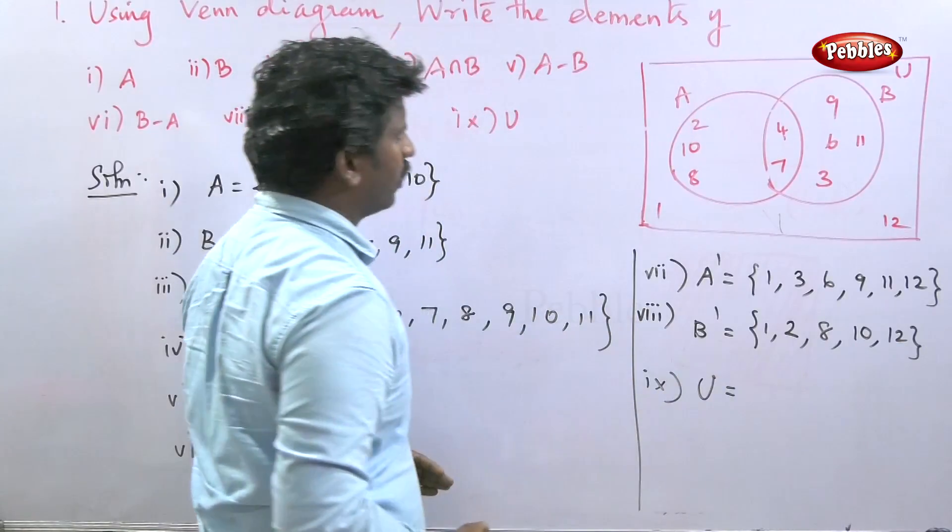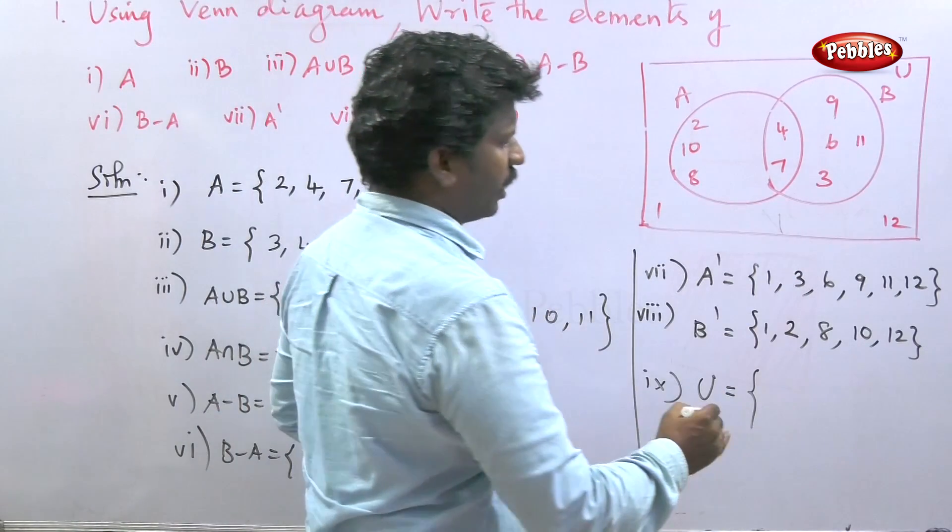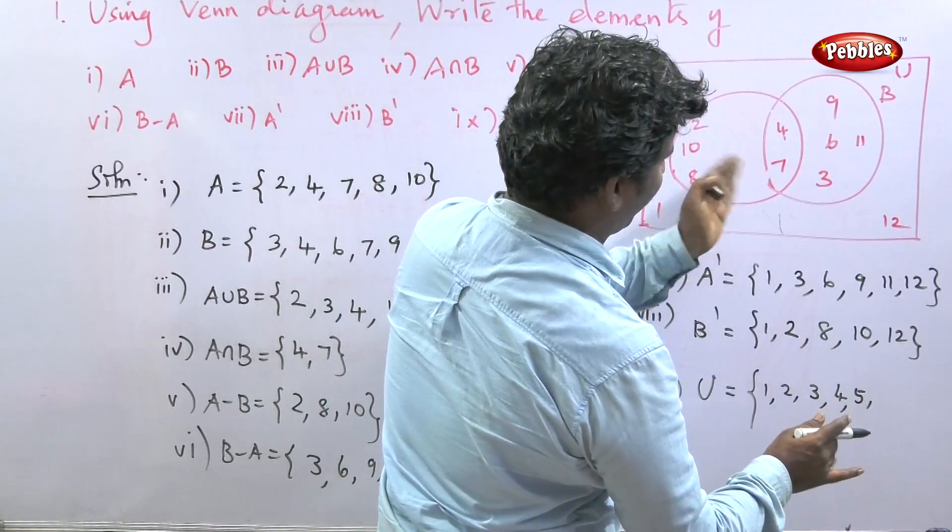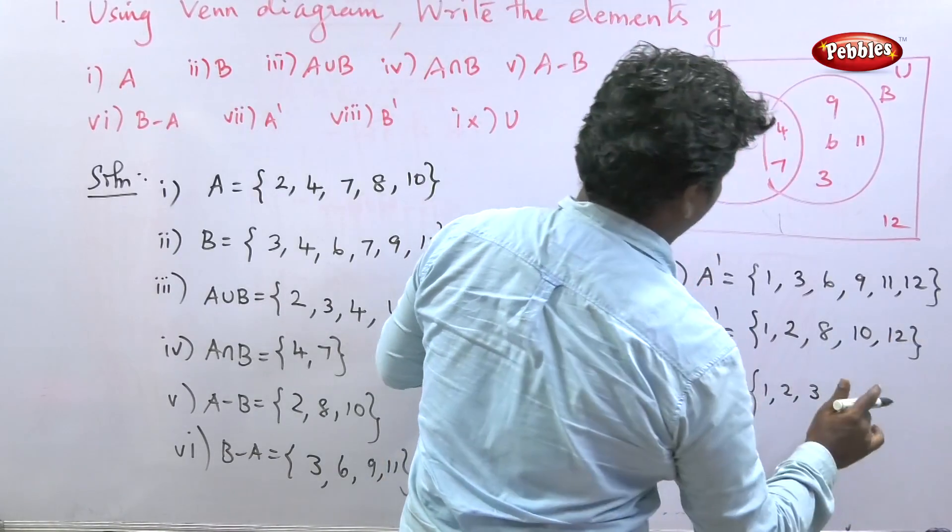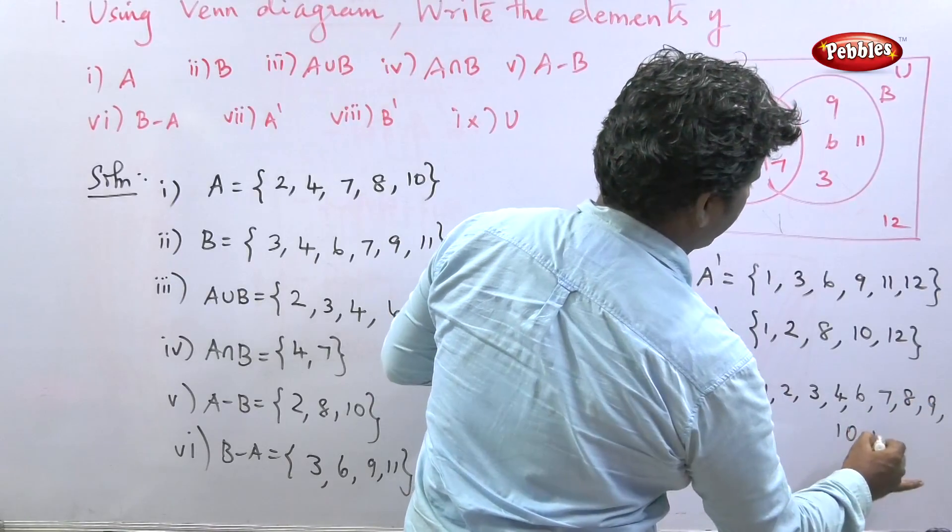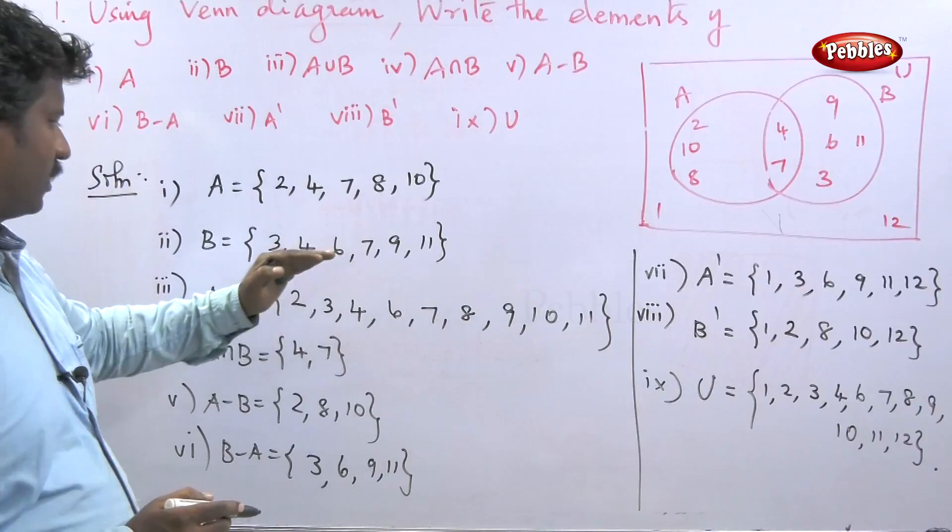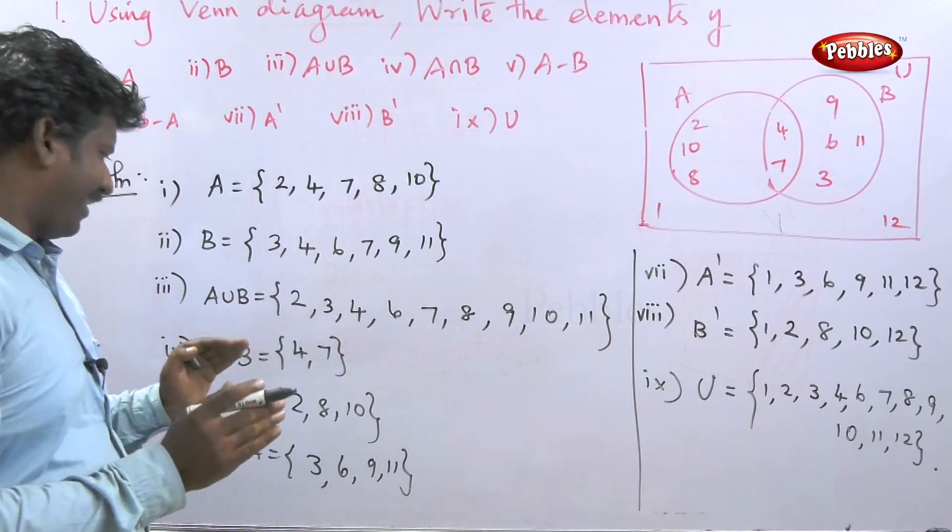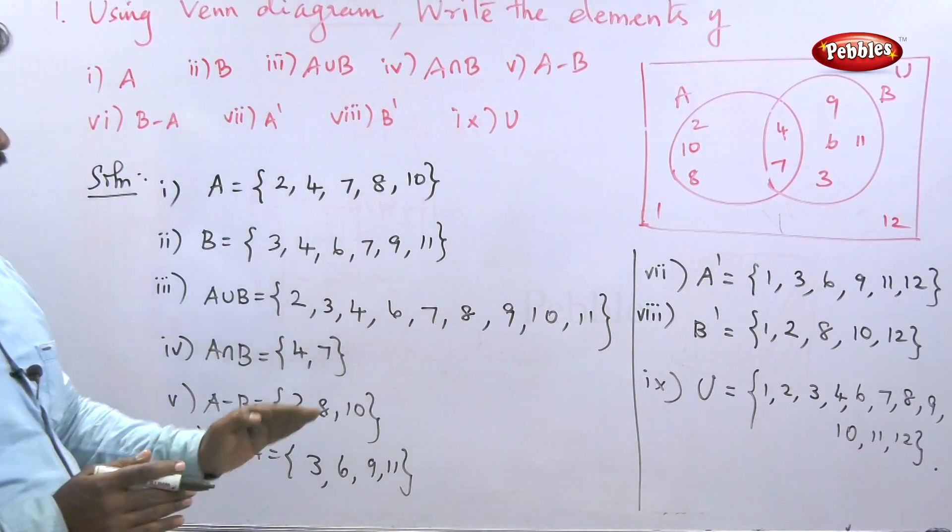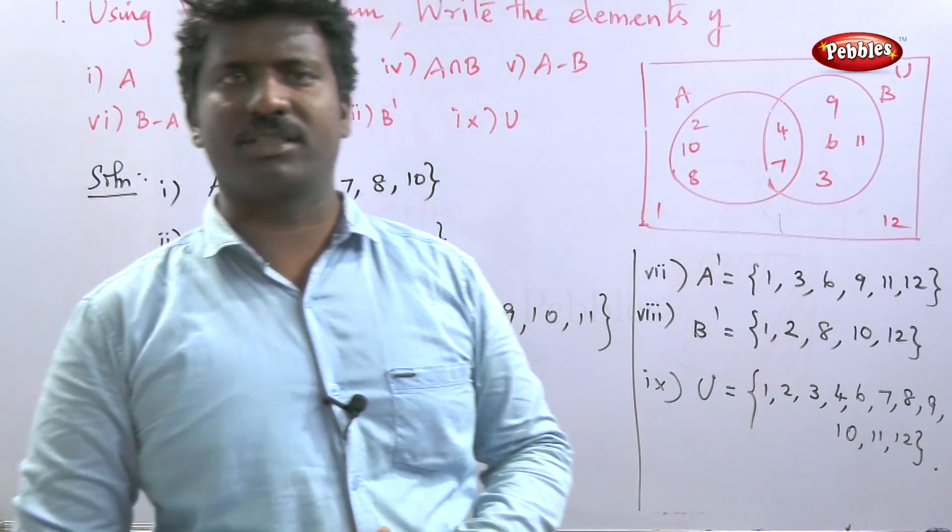The ninth one is the universal set, the whole set. All elements in the box: 1, 2, 3, 4, 6, 7, 8, 9, 10, 11, 12. This is the universal set, where union joins elements, intersection finds common values, A minus B removes B elements from A, B minus A removes A elements from B, and complementation finds elements outside the set.